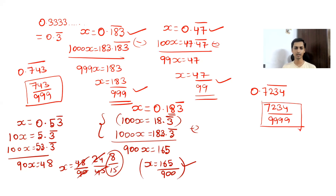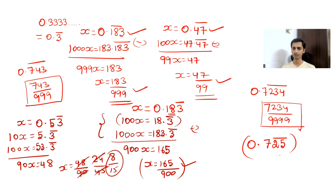Here is a workout question for you: find the vulgar fraction equivalent of 0.725 bar, where the bar applies only to 25. Try to solve this problem and post your answer in the comments. Now let's move to the second shortcut.